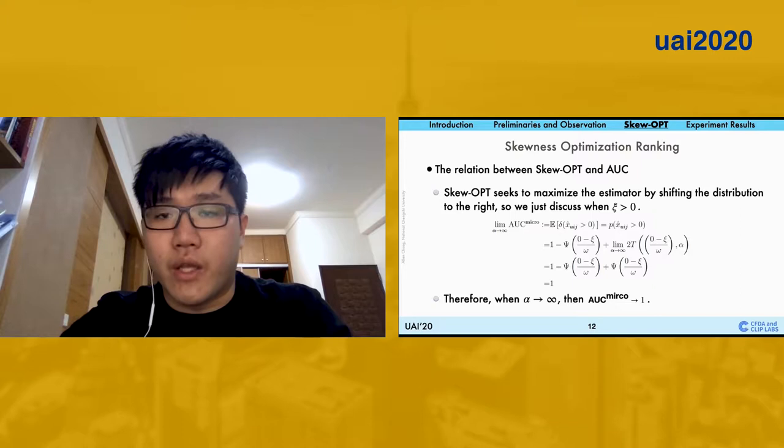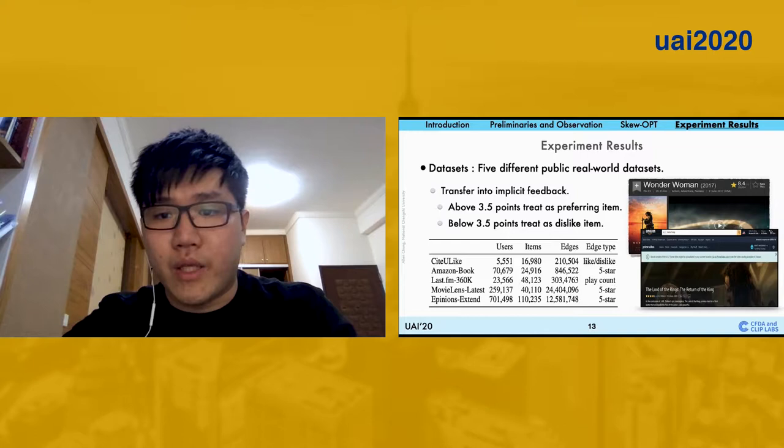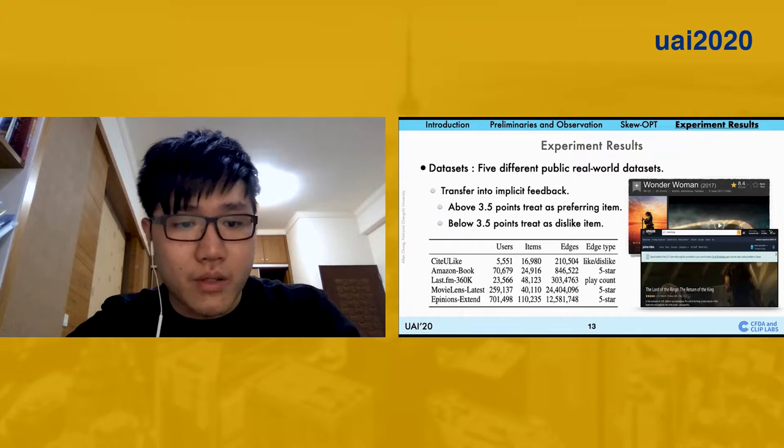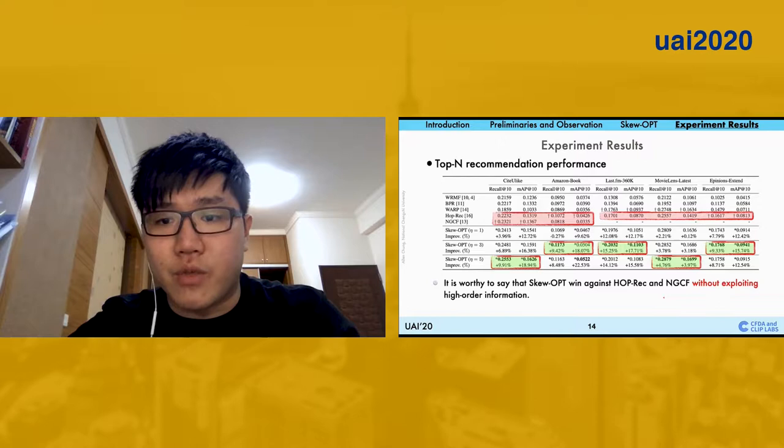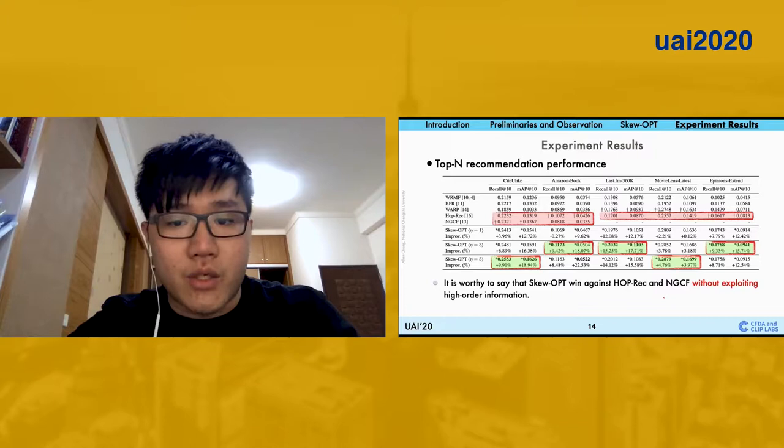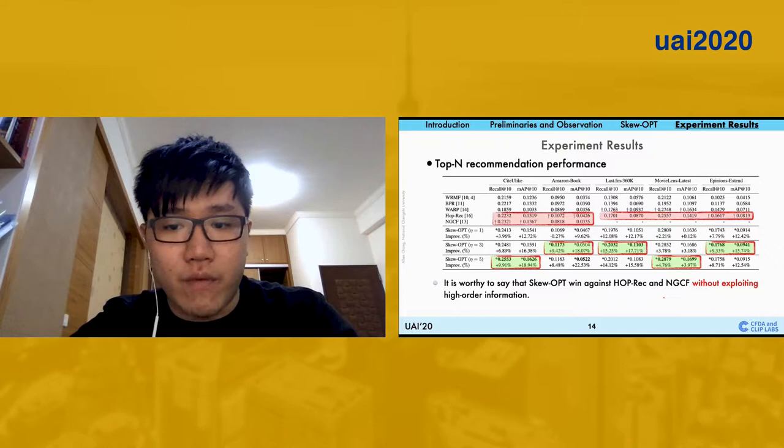For our experiment part, we choose five different public datasets with various demands. We transfer user items in their actions into implicit feedbacks, and we conduct a top-N recognition test to test the performance of the skewness optimizations. It is also worth mentioning that skewness optimizations win against heartbreak and NGCF without exploiting high order information.